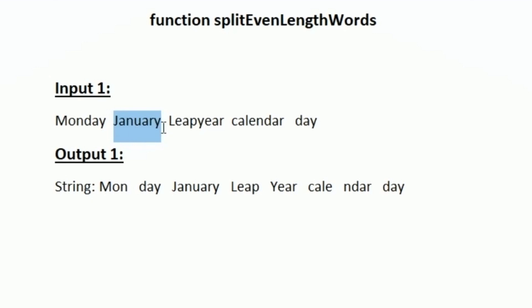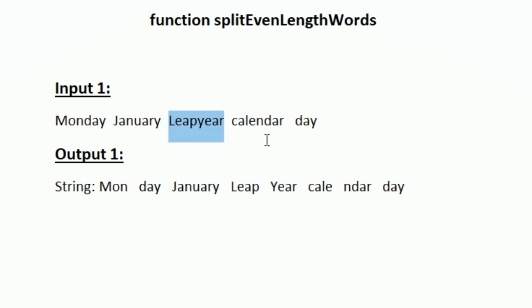The next word is January, which has seven characters. Since seven is odd, we make no changes and keep it as-is. The next word is 'leap year', which has eight characters total — eight is even — so we split it: the first four characters ('leap') and the last four ('year') become separate strings with a space between them.